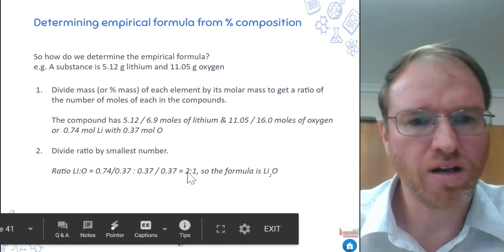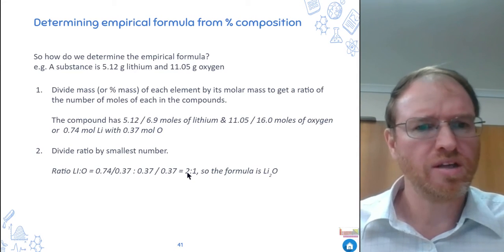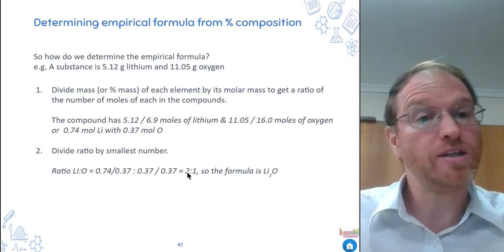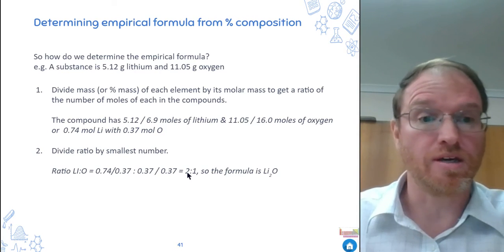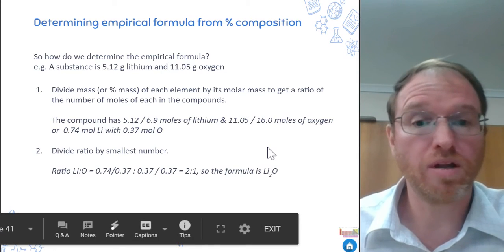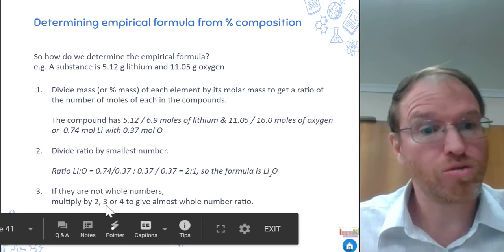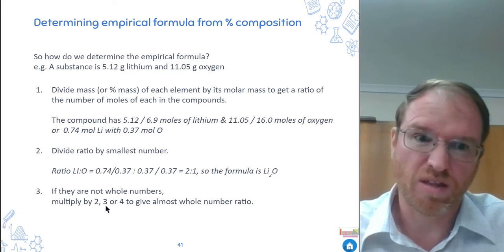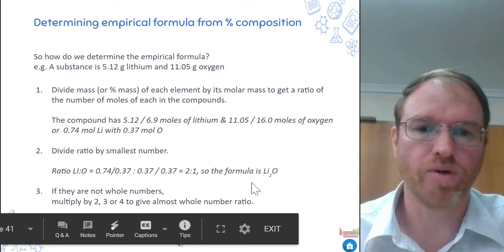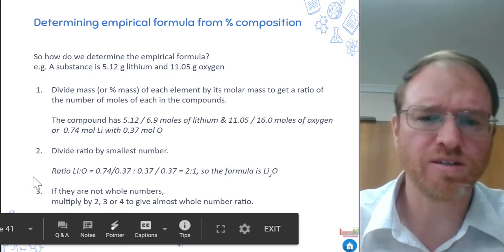Now, sometimes you've got a ratio like 2 to 1.5. What would you do then? Well, you want to double it to get rid of that half. If it's 2 to 1.5, you double it and you get 4 to 3. So if there are halves in there or thirds, you want to multiply to get rid of those. So we would multiply by 2 if there are halves, multiply by 3 if there's clearly a third in there, multiply by 4 if there's clearly a quarter, so that you get a nice whole number ratio. And it won't be exact. So the last thing you'll need to do is round it off.